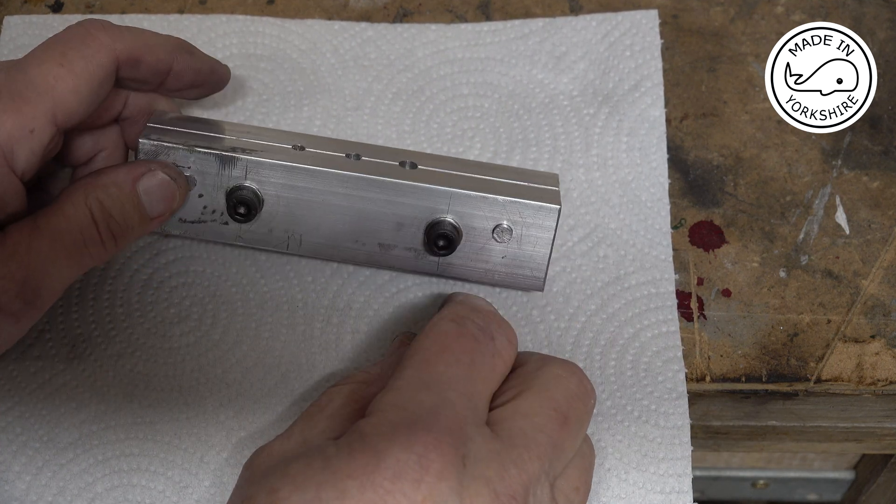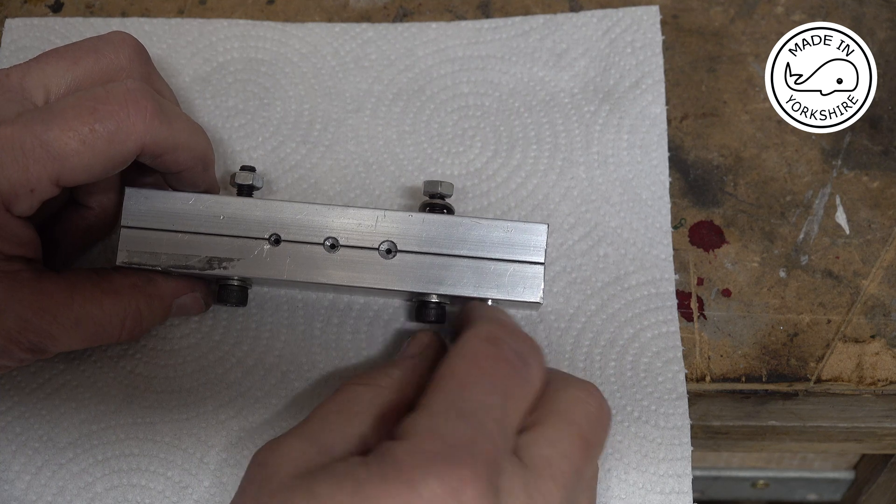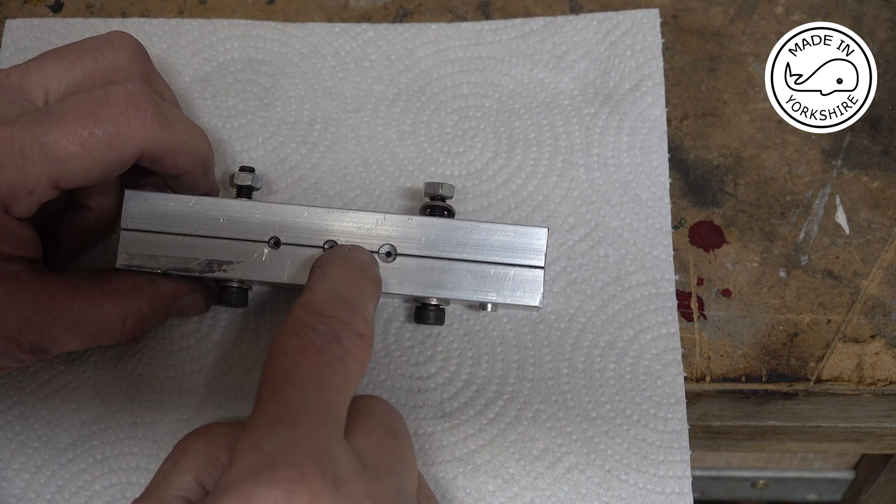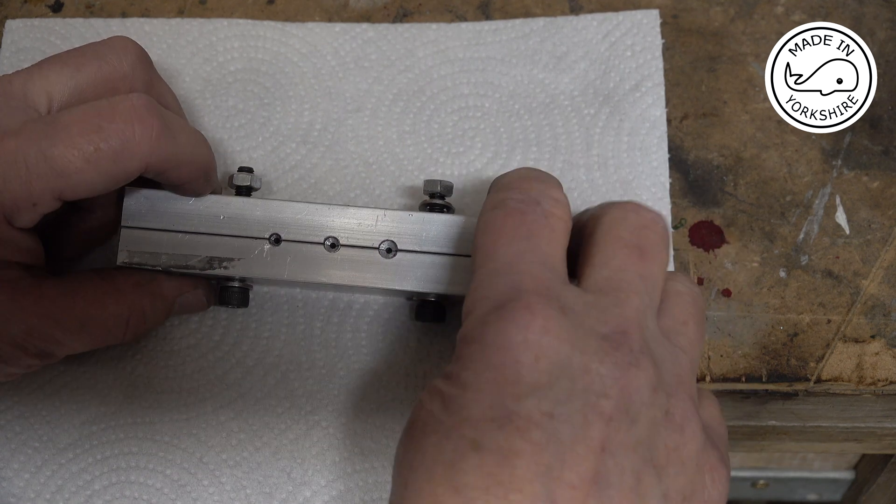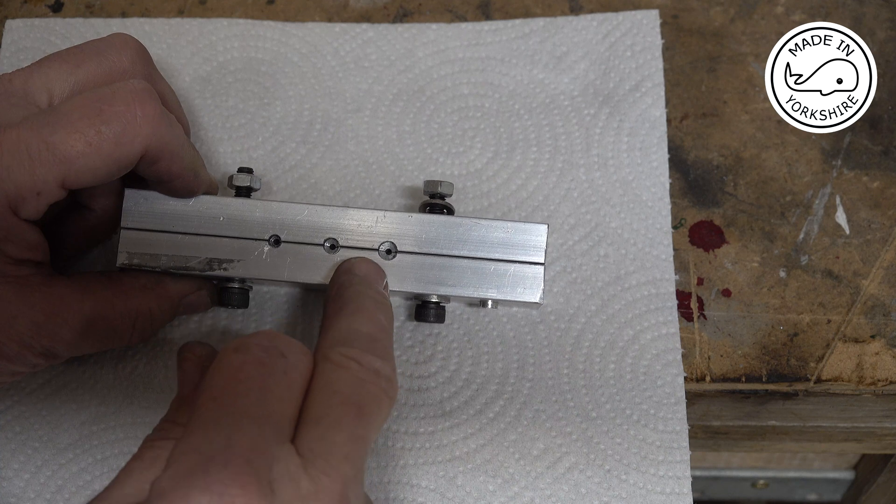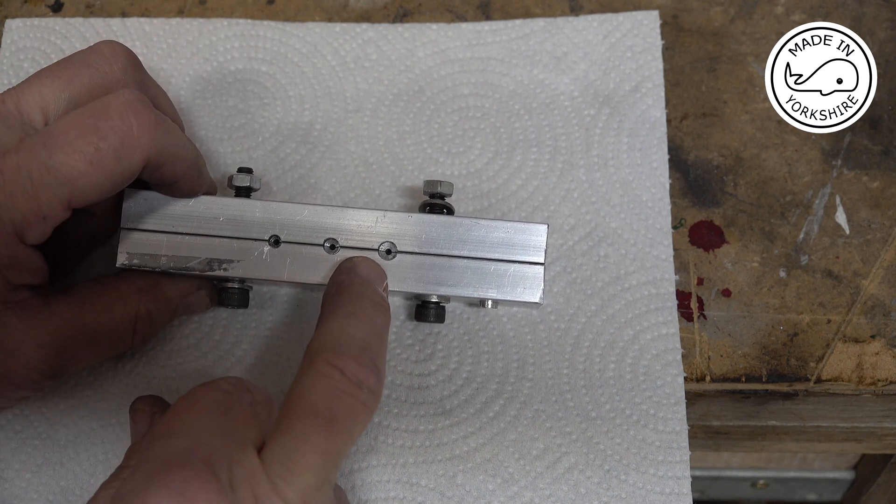Put it in the mill and put a couple of pieces of printer paper between the join here and clamp it up. And then what I've done here for a two millimetre cable, I've drilled three two millimetre diameter holes.